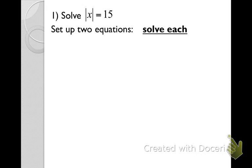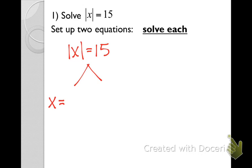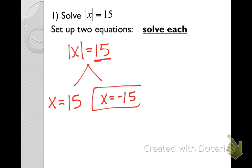We're going to start with the absolute value of x equals fifteen. First, make sure the absolute value bar is alone on the left side, which it is — we don't have anything outside or inside other than x. We're going to split this into two problems. I draw a little upside-down v to remind me to break it up. Drop the absolute value bar, set x equal to positive fifteen and negative fifteen, and solve. So x equals fifteen and x equals negative fifteen.